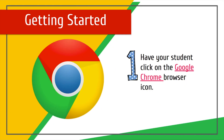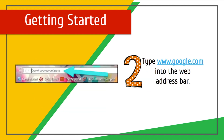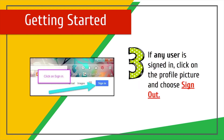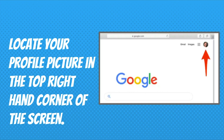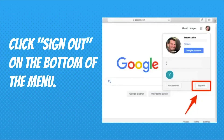To get started, click on the Google Chrome browser icon. The student will type www.google.com into the web address bar. If any user has already signed into Chrome, the student will click on the profile picture and choose Sign Out. Locate the profile picture in the top right-hand corner of the screen and click Sign Out on the bottom of the menu.